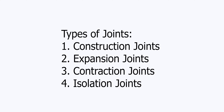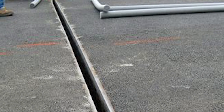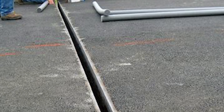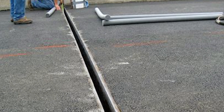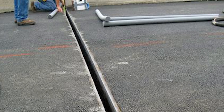Now, what are the types of joints in concrete? Joints in concrete are: construction joints, expansion joints, contraction joints, and isolation joints. These joints are placed in concrete slabs and pavements at regular intervals to prevent development of cracks in concrete.